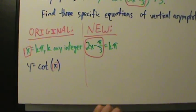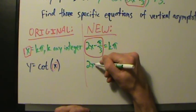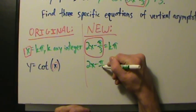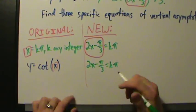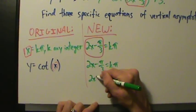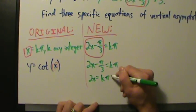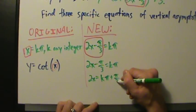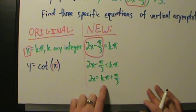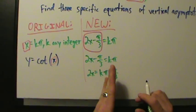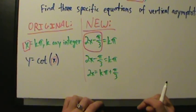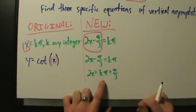After we've done that, now we just want to solve this equation for x. So: 2x minus pi over 3 equals k pi. We add pi over 3 to both sides: 2x equals k pi plus pi over 3. That can't be simplified because it has a k in it. Our answer should have a k in it, because it's a general equation for vertical asymptotes.